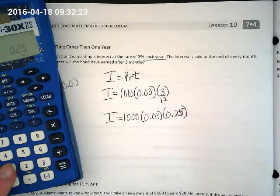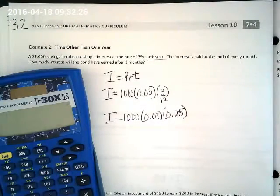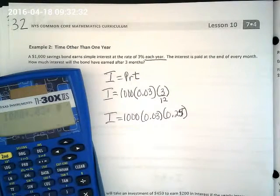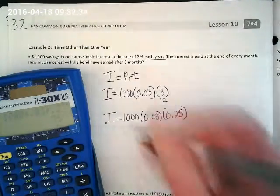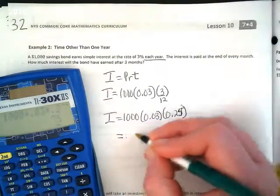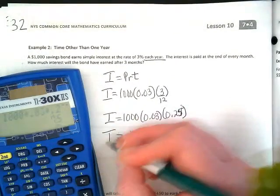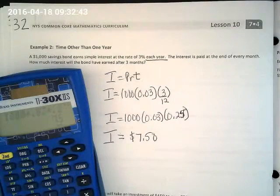Go ahead and calculate that. We just multiply all three numbers together. So $7.50 at the end of 3 months.